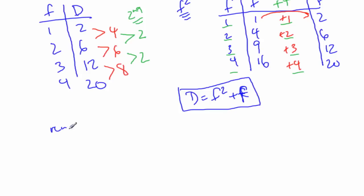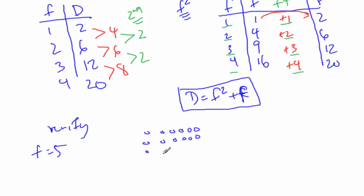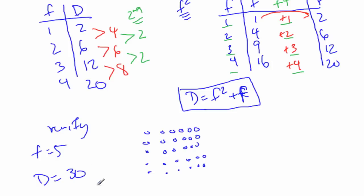So let's verify. We've got up to four in our table, so we need to look at f equal to five. So I go one, two, three, four, five, six across, and one, two, three, four, five rows down. If I count all those up, I have 30 dots. This is by pattern.